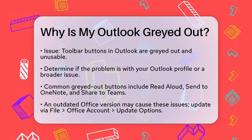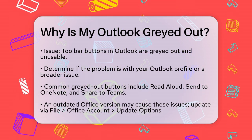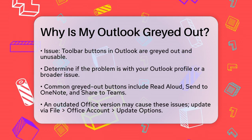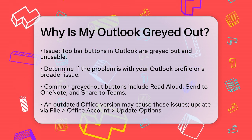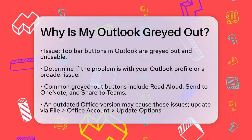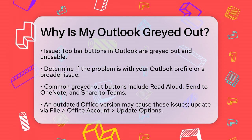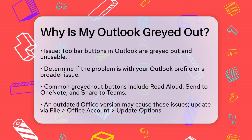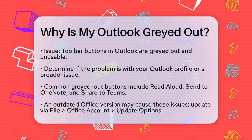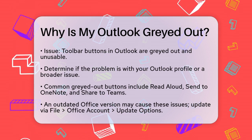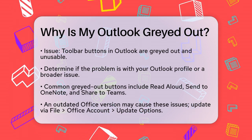First, it's important to check if the issue is specific to your Outlook profile or if it's a broader problem. Sometimes, certain buttons like Read Aloud, Send to OneNote, Share to Teams, Report Phish, Send Documents, and Reply with Meeting Poll can be grayed out due to various reasons.